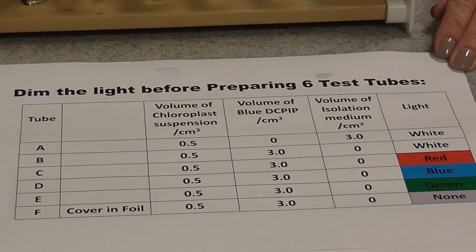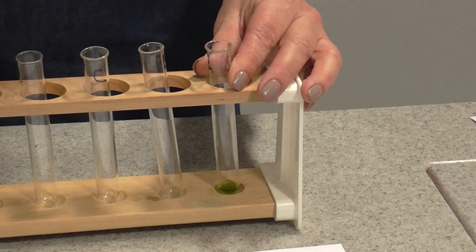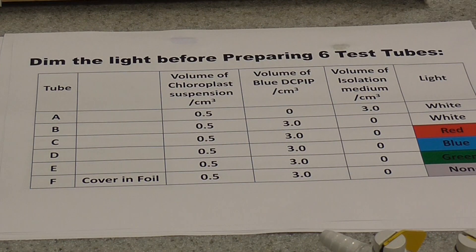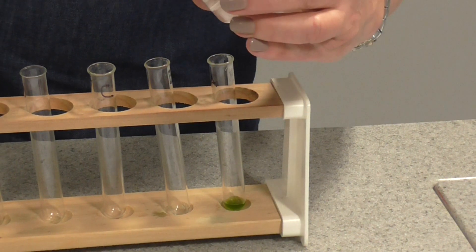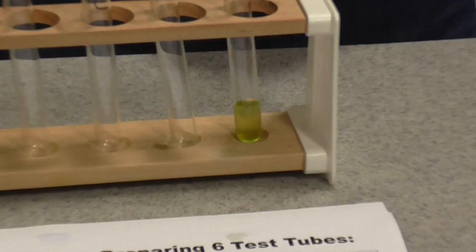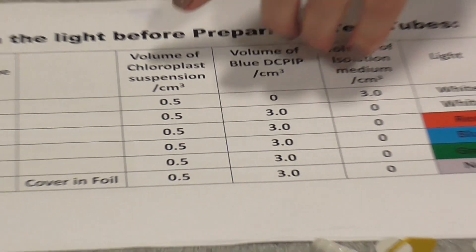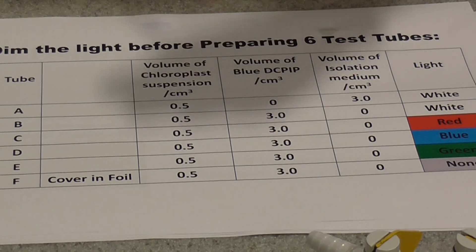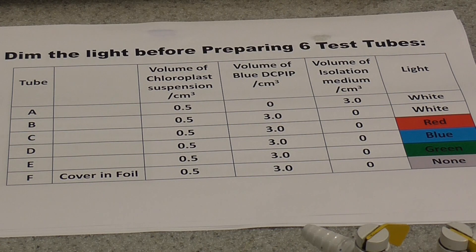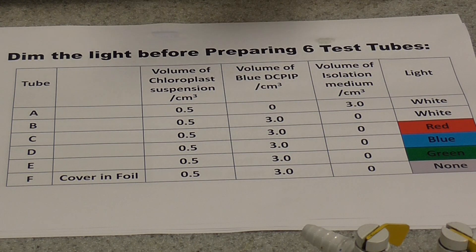In tube A, I'm going to add 0.5 centimetres cubed of chloroplasts and three centimetres cubed of isolation medium. Tube A is quite important because we're not going to put any DCPIP in there — it shows what the chloroplasts look like at the beginning, with no blue colour. In the rest of the tubes, put 0.5 centimetres cubed of chloroplast extract in each one, including the one wrapped in foil, and add three centimetres cubed of DCPIP to each tube. It's really important that you limit their exposure to light.